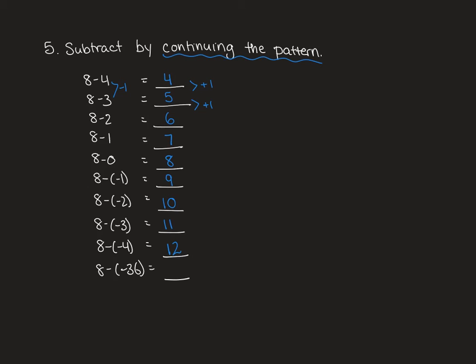Then we run into an issue. We have to figure out 8 minus -36. Well, what you might notice is that 8 minus -1 gives you the same answer as 8 plus 1. 8 minus -2 gives you the same answer as 8 plus 2. 8 minus -3 gives you the same as 8 plus 3. 8 minus -4 gives you the same as 8 plus 4. So in theory that should mean if we go 8 plus 36 is 44, that will give us the same answer for 8 minus -36.